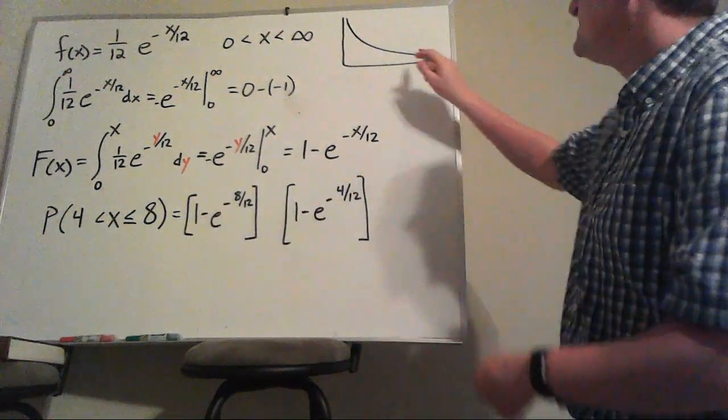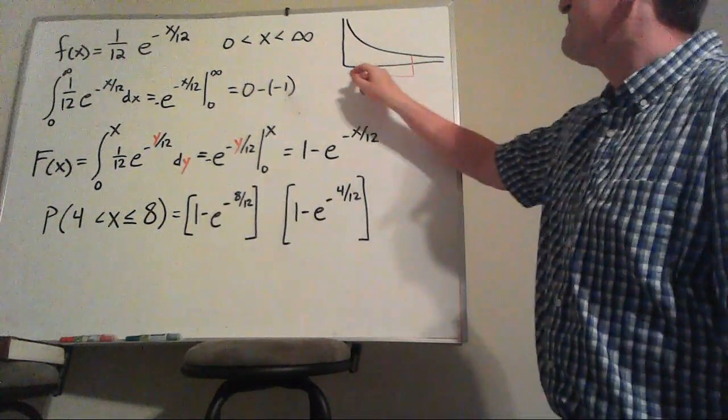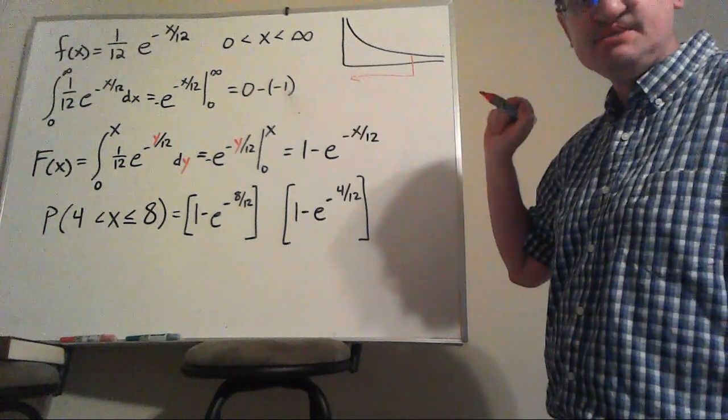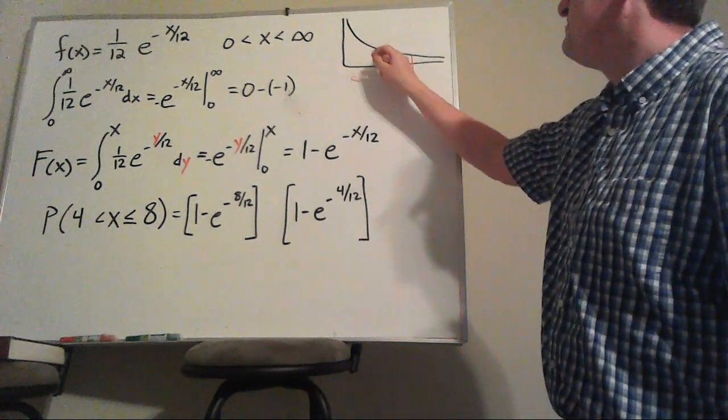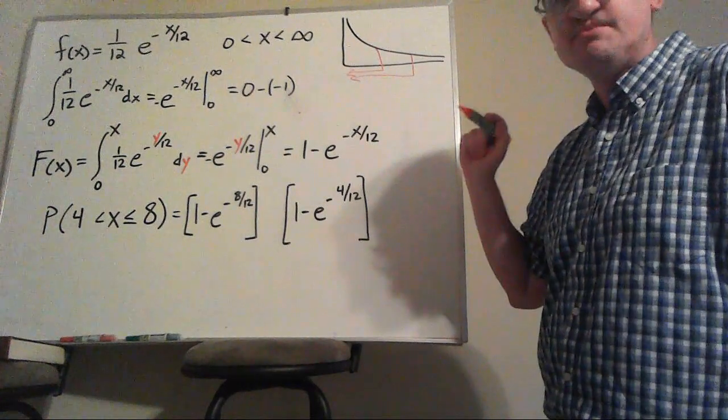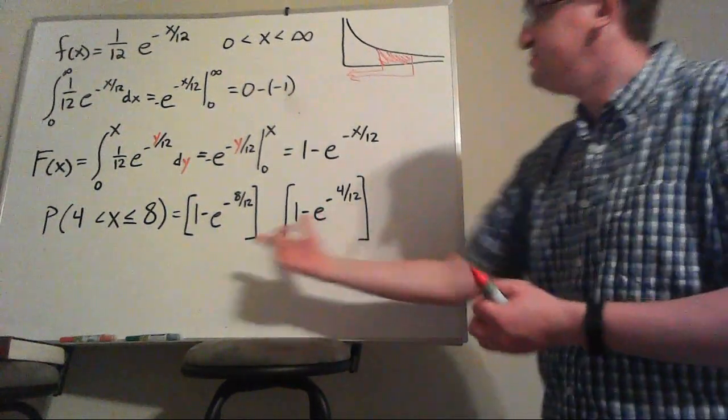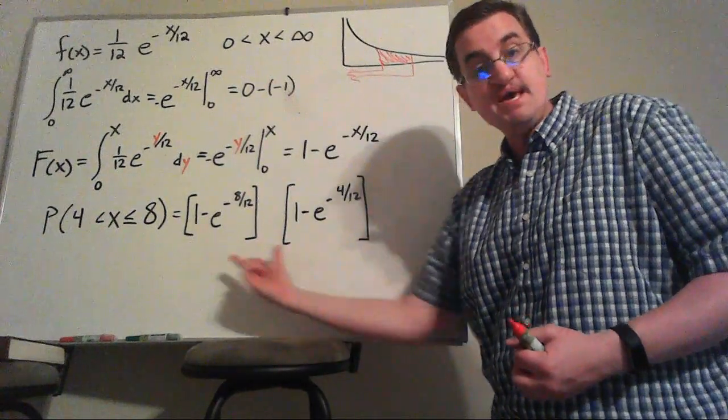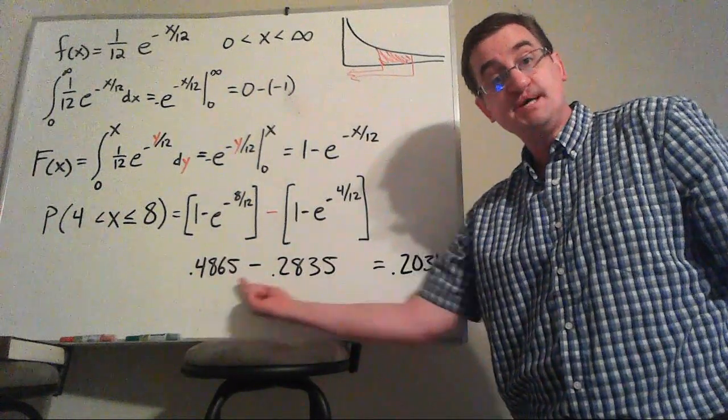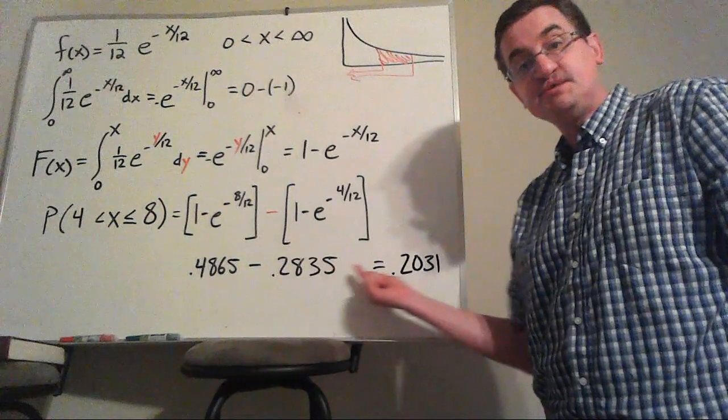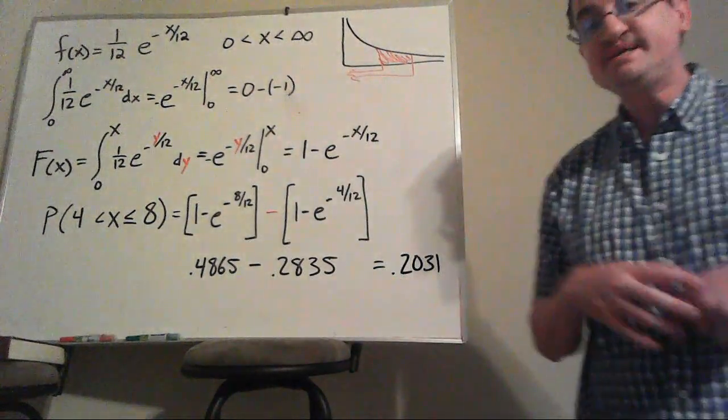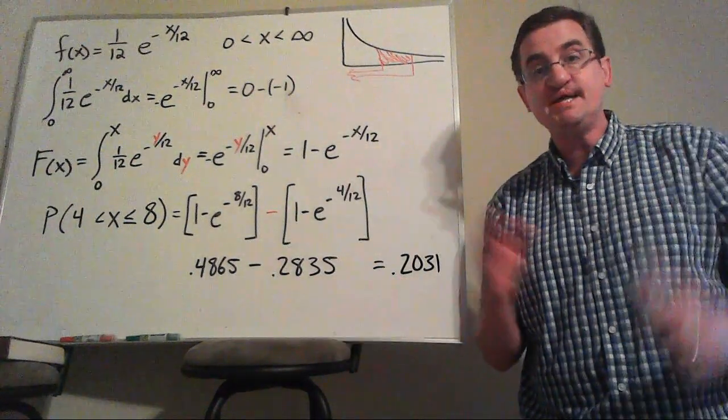And what that gives me is the area from 8 down to 0, also the area from 4 down to 0. So if I want the area in between them, what I'm going to do is take the big area from the 8. That's the 48% minus the 28% leaves me with the 20% as that area in between that range.